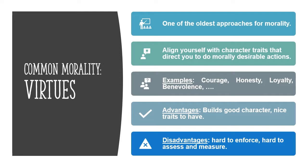Another approach that can be used to assess situations is virtues — one of the most known and oldest forms of morality. Virtues are character traits that a person can align themselves with in order to conduct morally desirable actions, such as courage, honesty, loyalty, and benevolence. Virtues are good to possess as they help build a good character, yet they are quite difficult to enforce, assess, or measure. We do not have measures for loyalty and honesty like we have thermometers. Therefore, models of morality kept developing because humanity wasn't satisfied — we need clearer boundaries.